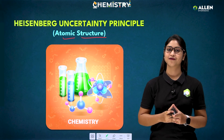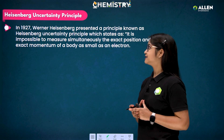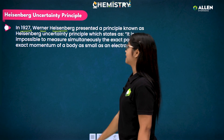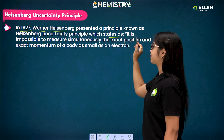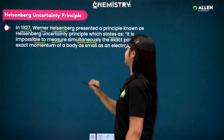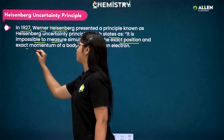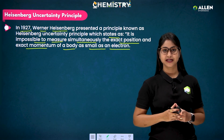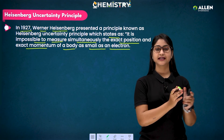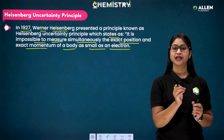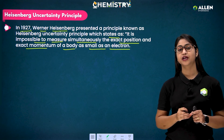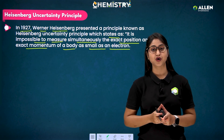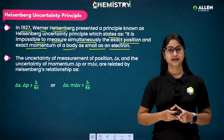Today we are going to start the very first topic of this series: the Heisenberg Uncertainty Principle, taken from the chapter Atomic Structure. This principle was given by Werner Heisenberg in 1927. It states that it is impossible to measure simultaneously the exact position and exact momentum of a body as small as an electron — you cannot find both at the same time.